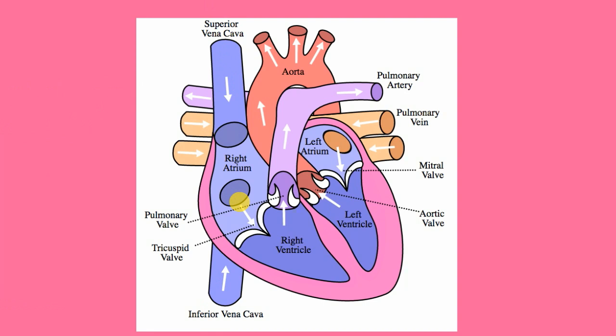The blood then passes through the tricuspid valve and into the muscular right ventricle. The right ventricle contracts and sends the blood through the pulmonary valve and into the pulmonary arteries. These arteries lead to the lungs.